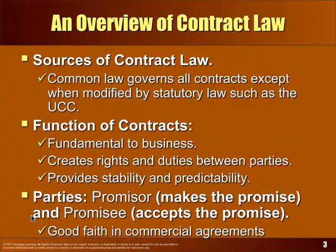The parties to a contract: ORs are usually the one doing it, EEs are usually the one that it's done to. So the promisor is the one making the promise, the promisee is the one accepting the promise. Some contracts involve a mutual exchange of promises; sometimes only one side is making a promise.